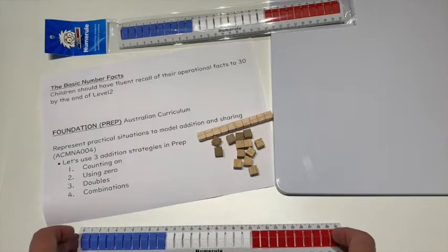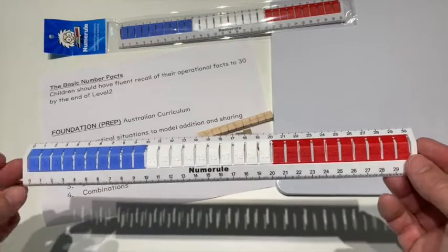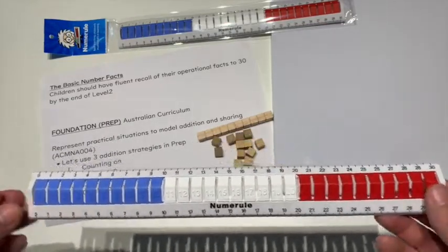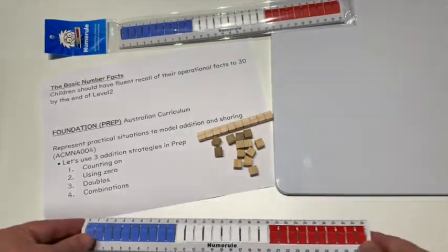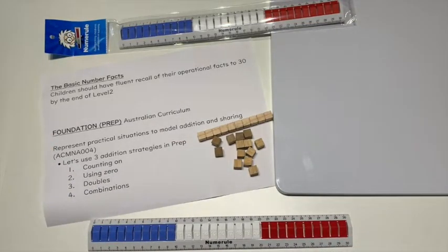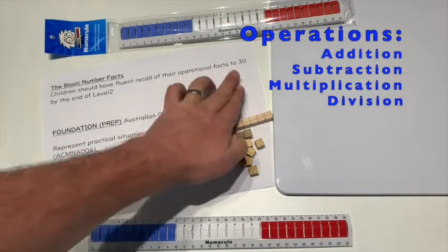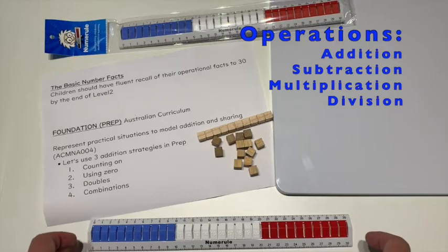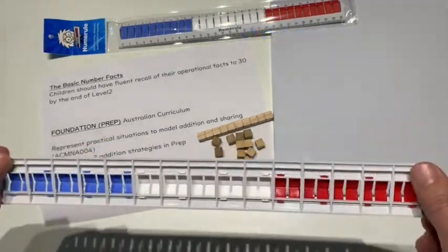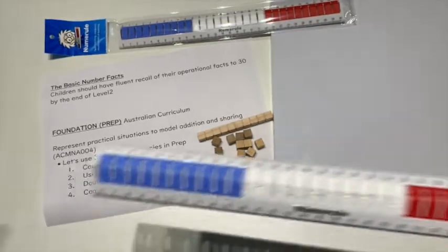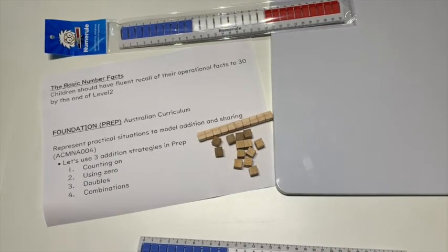Hi there everybody. I'm going to show you some micro lessons on the use of the numeral, starting with the basic number facts. Children should have fluent recall of their operational facts to 30 by the end of level 2, which is grade 2. I'm going to show you some of the uses with the numeral, but there are many uses so we're only going to look at just a few today.